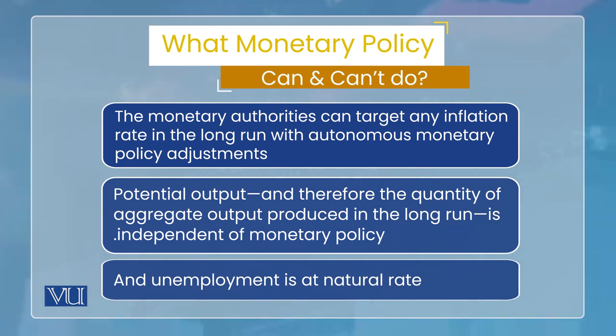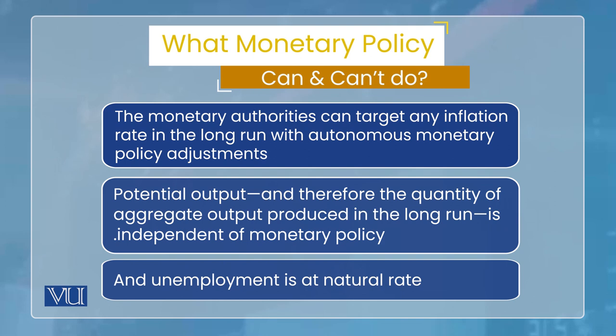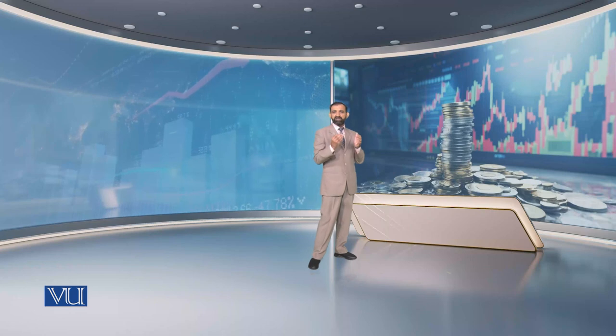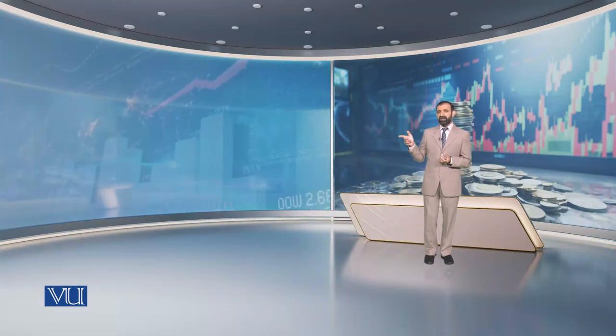अगर आपको पिछले lectures का idea है जिसमें हमने aggregate demand aggregate supply का model discuss किया, तो वहां से यह clear हो गया होगा कि long run में economic activity अपने potential level पर वापस आती है, unemployment rate अपने natural rate पर वापस आता है। लेकिन inflation permanently up या down हो सकता है। इसका मतलब है कि long run में real variables — output और employment — are independent of monetary policy. Monetary policy inflation का कोई भी level choose कर सकती है, लेकिन real variables का level choose नहीं कर सकती।